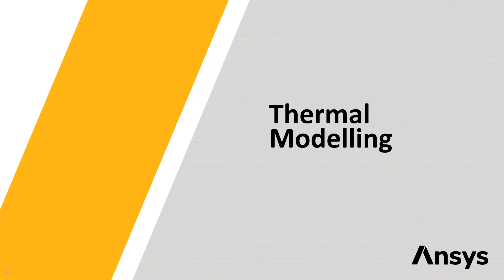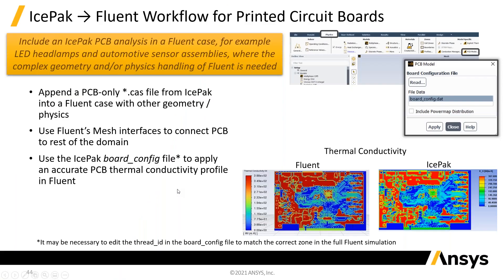Let's jump on to thermal modelling. There's nothing particularly new here, just a lot of useful improvements. So if you need to, you can bring the representation of a PCB board into Fluent. The idea is that when you've got all the copper layout on the board, you want to bring in essentially the thermal conductivity tensor, because you've got high and low values due to the relative composition of copper in each volume or surface.